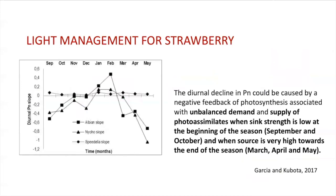For example, how light can affect some crops. In 2017, it was reported that a strawberry can suffer a negative feedback in photosynthesis, showing a negative slope in photosynthesis during the day when we have an unbalanced demand between sink and source. At the beginning of the season, we have a negative slope because we have a small plant receiving a lot of light — we have leaves, flowers, and fruits, but in very low quantity. By the end of the season, we have a big plant but more radiation, so again we have an unbalanced demand between sink and source, and we still have a negative slope. This is an example of negative feedback in photosynthesis due to an unbalanced demand between sink and source.